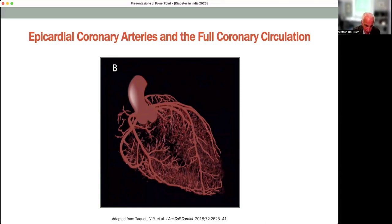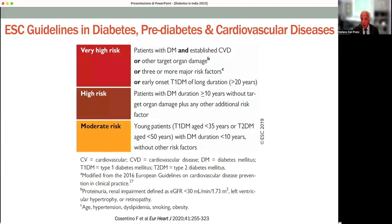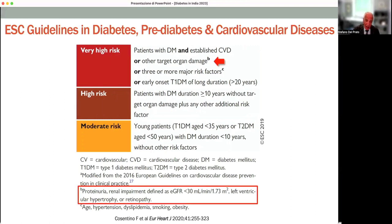It is not surprising that the current recommendation for risk stratification in people with diabetes or pre-diabetes, as done by the European Society of Cardiology, includes among the elements used to define the degree of risk the presence of target organ damage — referring to the presence of proteinuria, retinopathy, and impaired kidney function, which represent the typical traditional microvascular complications of diabetes.